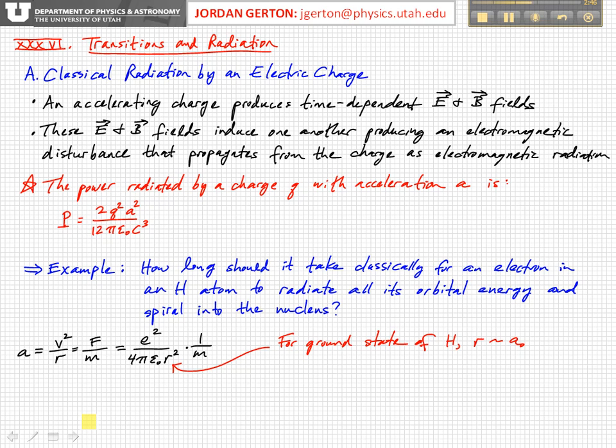We know from classical mechanics the acceleration of a particle going around in a circular orbit is equal to the velocity squared divided by the radius of that orbit, v squared over r, and of course the acceleration by Newton's second law is always equal to the force divided by the mass.